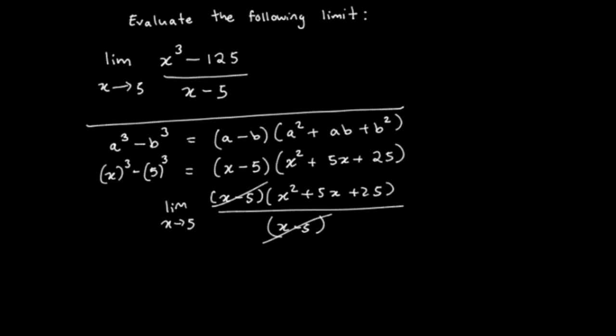So now we can get rid of that and we can substitute x equals 5. So now if we let x equal 5, these guys are gone. We get 5 squared plus 5 times 5 plus 25, which is 25 plus 25 plus 25, and that's going to give us 75. So that's what our limit is going to give us.